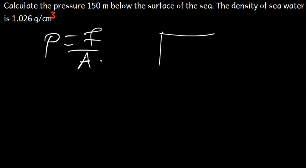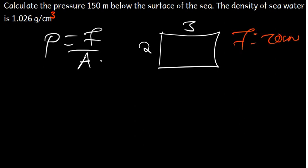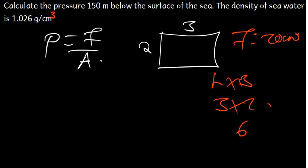Let's say you have a surface which has dimensions of 3 and 2. The force acting on this surface, let's say it is 200 newtons. To find the area of this surface, it is going to be L times B, which is 3 times 2, giving us 6 meters squared.